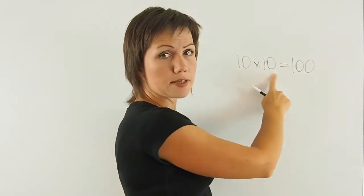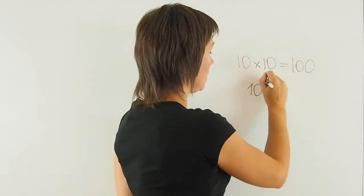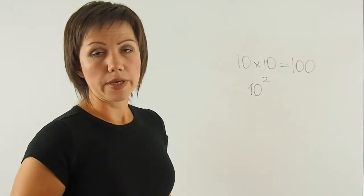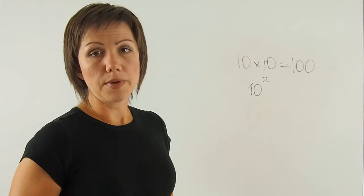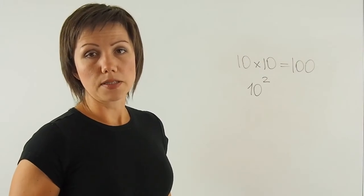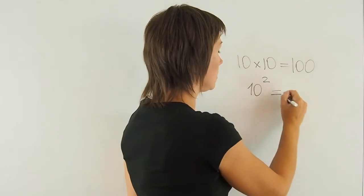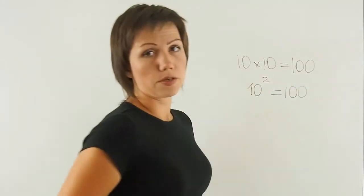I can represent this expression using an exponent of 2 because an exponent tells me how many times I multiply the number by itself. In this case, twice, which is also going to be 100.